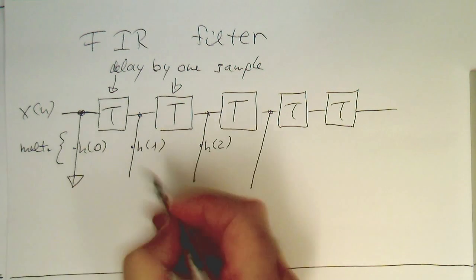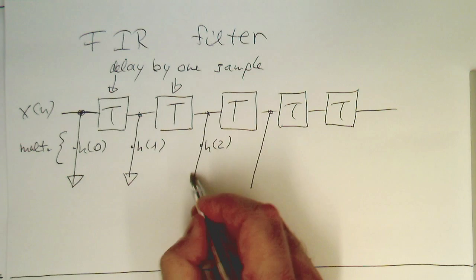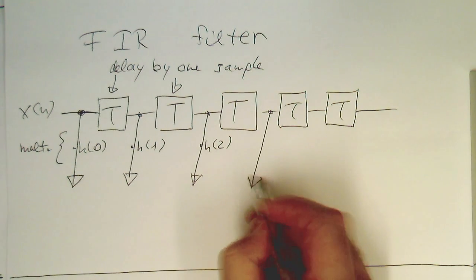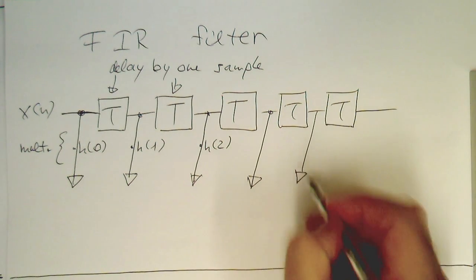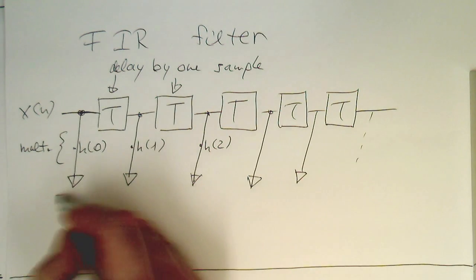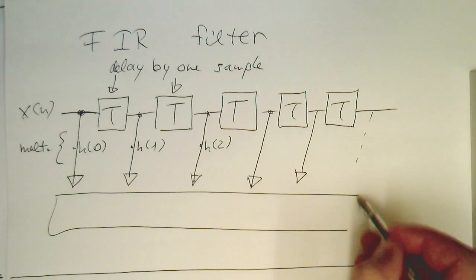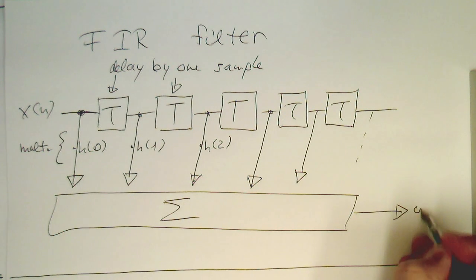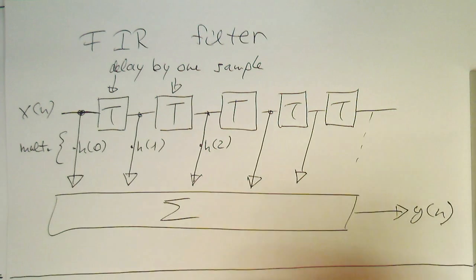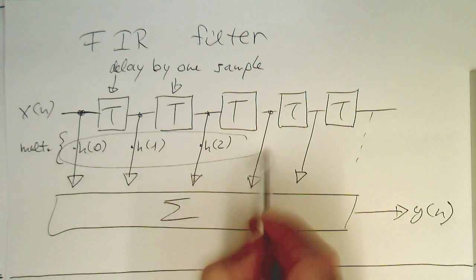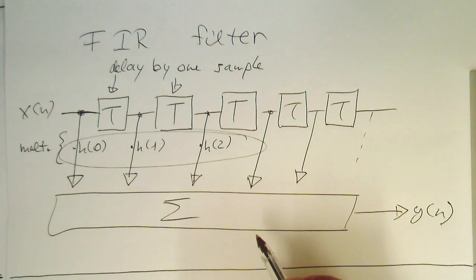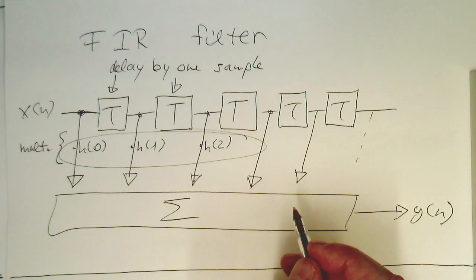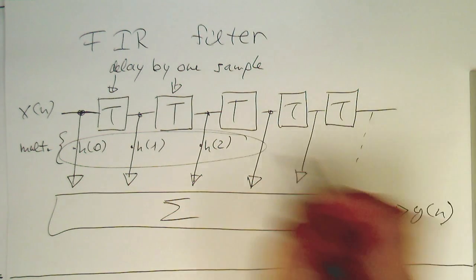They are all summed up and sent out as the output signal Y(n). And these factors here, these H(n), are our impulse response of the filter.